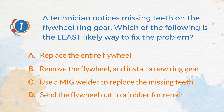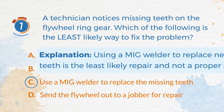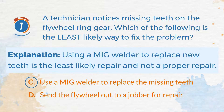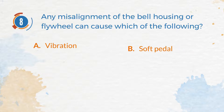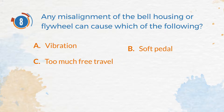The correct answer is C: Use a MIG welder to replace the missing teeth. Explanation: Using a MIG welder to replace new teeth is the least likely repair and not a proper repair. Number 8. Any misalignment of the bell housing or flywheel can cause which of the following? A. Vibration. B. Soft pedal. C. Too much free travel. D. Clutch slippage.